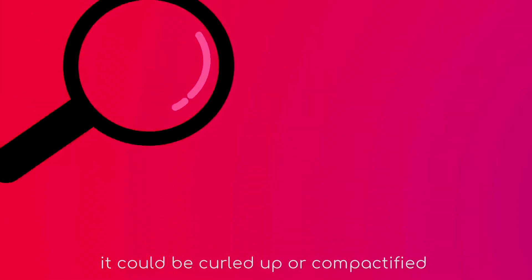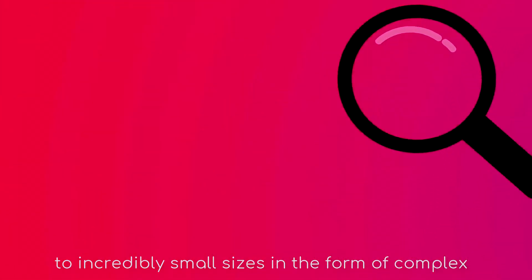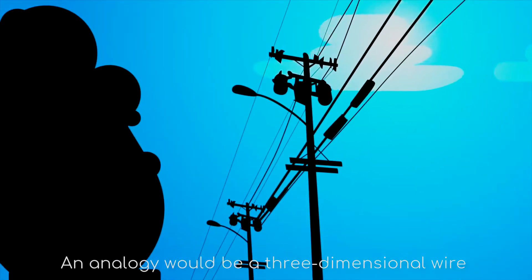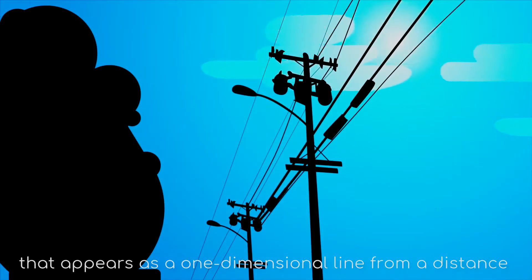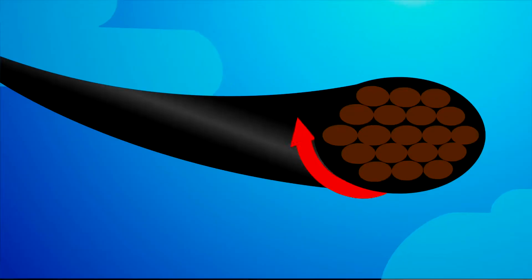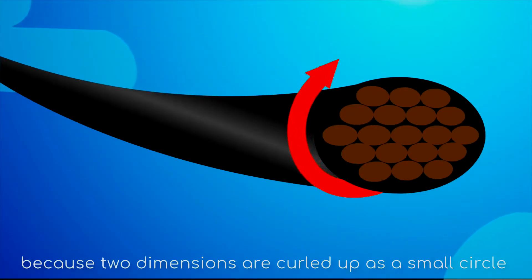It could be coiled up or compactified to incredibly small sizes in a form of complex Calabi-Yau manifolds. An analogy would be three-dimensional wire that appears as a one-dimensional line from a distance, because the other two dimensions are coiled up as a small circle.